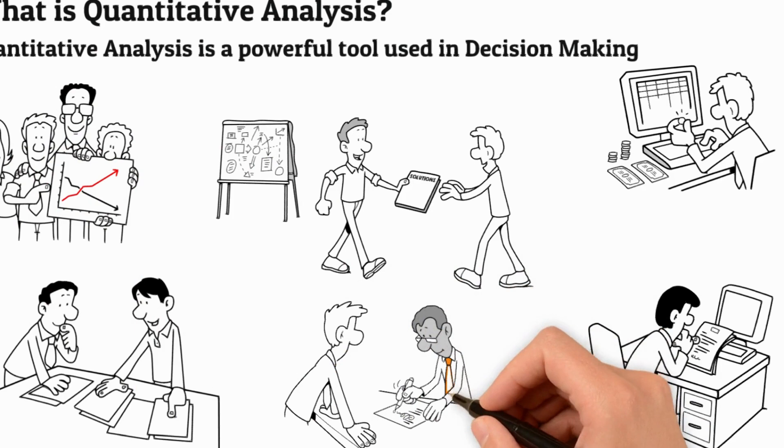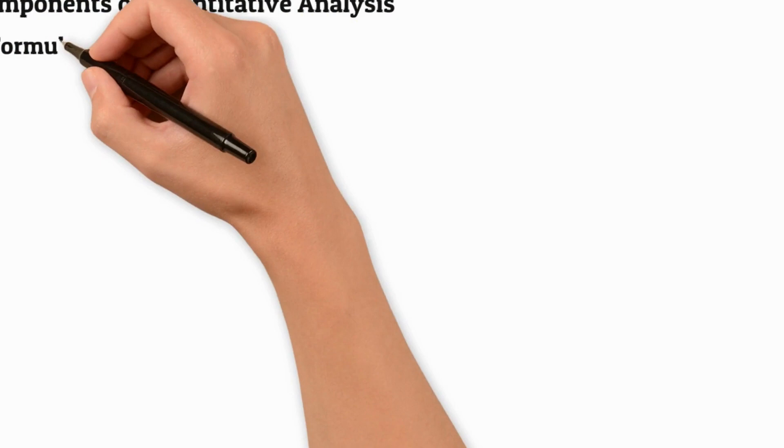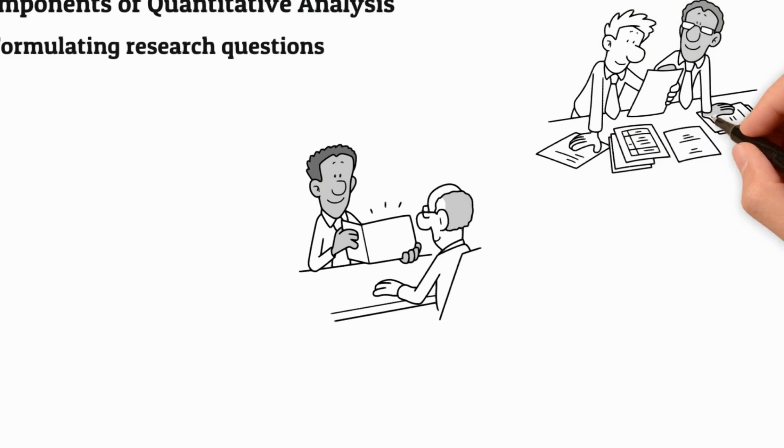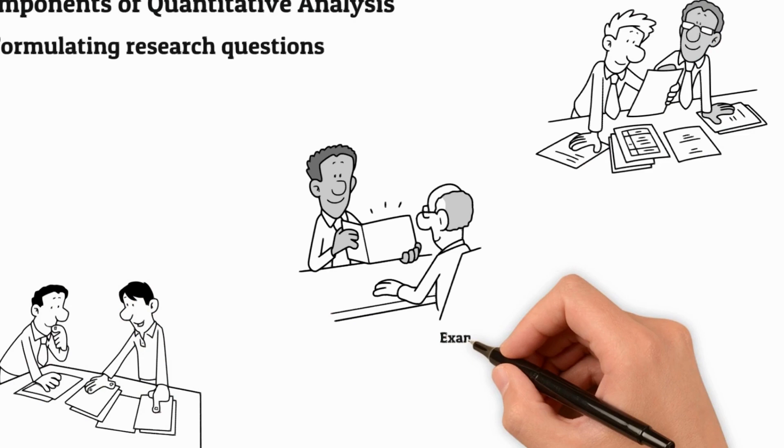The following are the various components of Quantitative Analysis. Formulating Research Questions: The first step in the process is to clearly state what information is needed and why it's important. It's important that the questions be stated in a way that they can be answered with a single number or data point. For example, what is the average age of our customers? Or how many hours does it take for us to process an order?